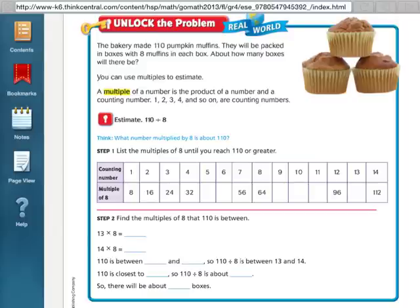Quotient and multiples. A quotient is the answer to a division problem, so they're wanting us to find estimates to division problems using multiples. And as you can see here on our page, the definition of a multiple is, it says a multiple of a number is the product of a number and a counting number. 1, 2, 3, 4, and so on are counting numbers.